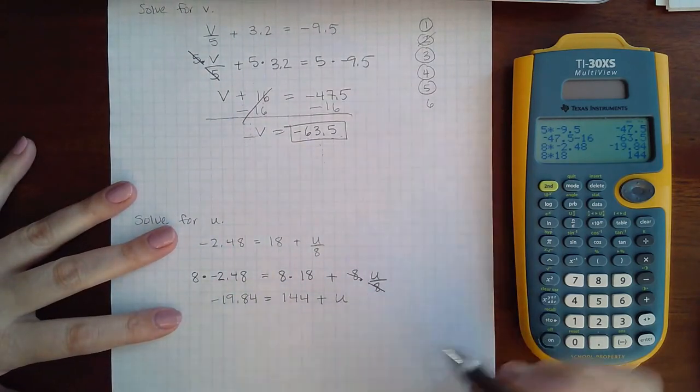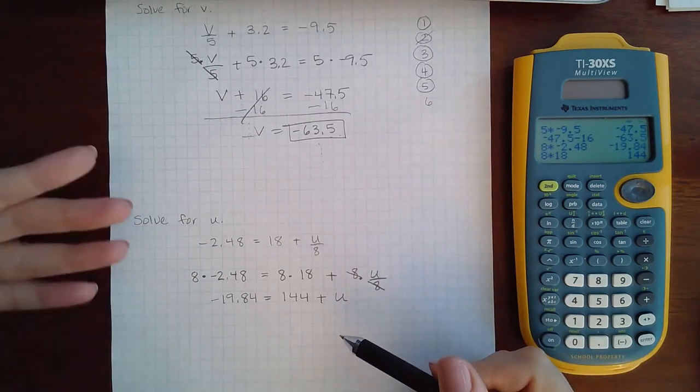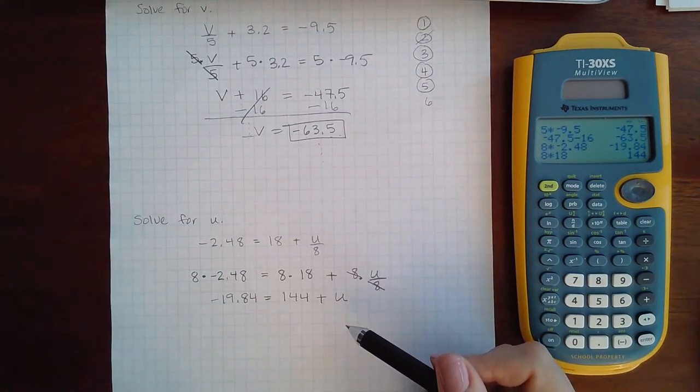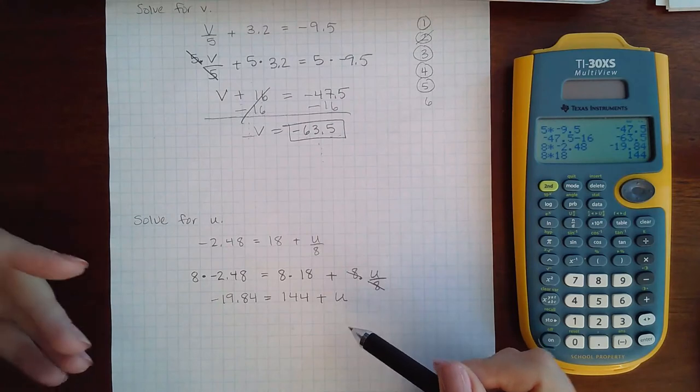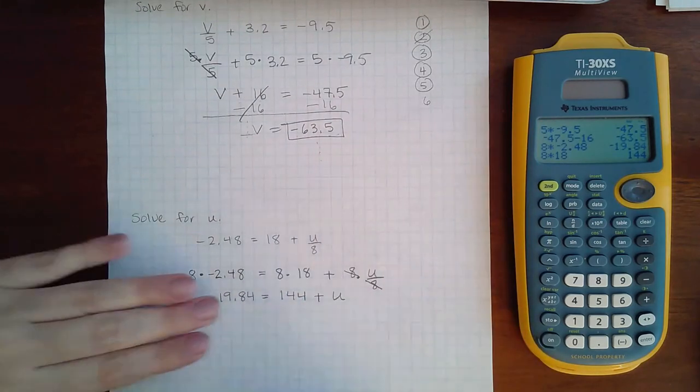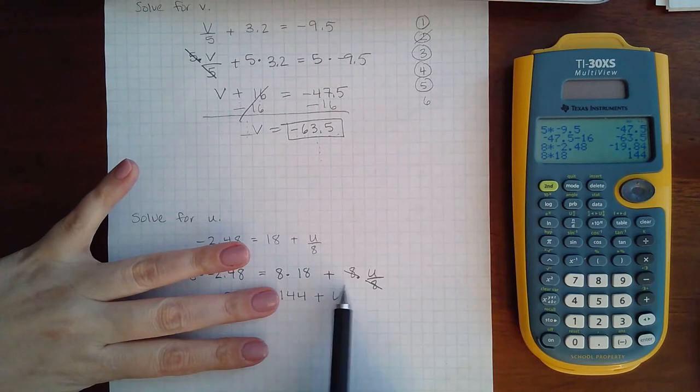Then I would try to distribute the parentheses, there's nothing to do. I would try to combine like terms, there's only one term on this side and these two terms are not the same on the other side.